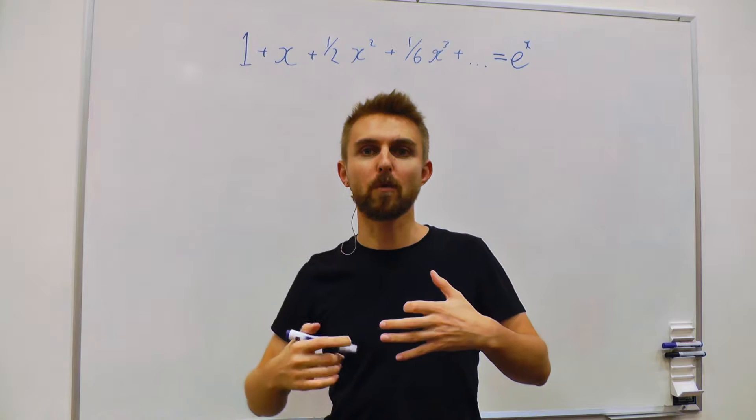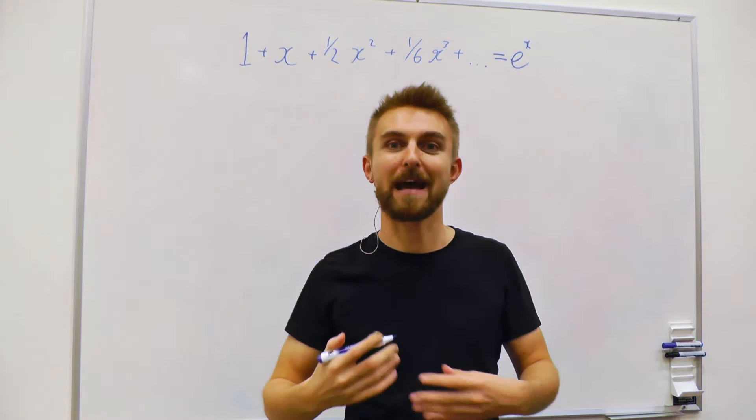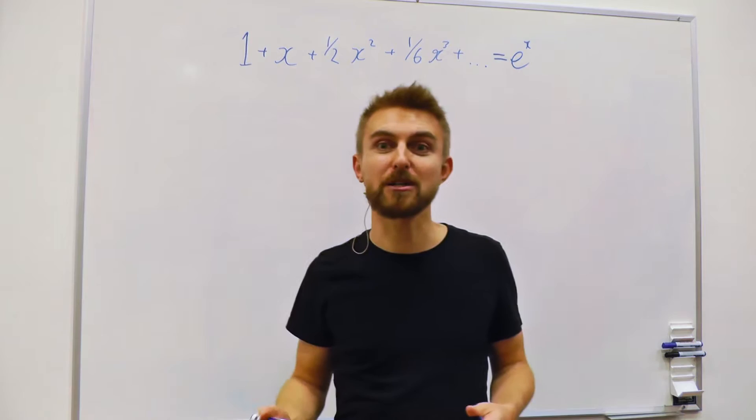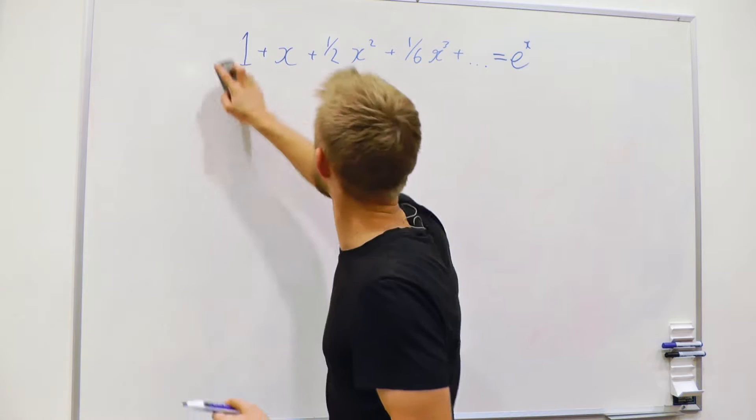In fact, e to the x is so well-behaved that it's what we call analytic, which means if we take this series out to infinity — if we have an infinite number of terms — this becomes a real equality. It's not an approximation. These two sides of the equation are exactly the same, which is pretty amazing.